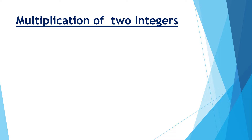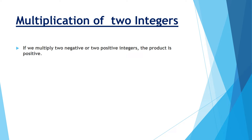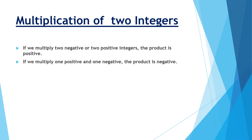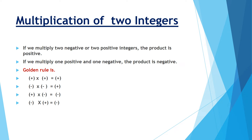If we multiply any two negative or two positive integers, then the product is positive. If we multiply one positive and one negative, then the product is negative. The golden rule for multiplication is: plus into plus is plus, minus into minus is plus, plus into minus is minus, and minus into plus is minus. This we need to remember to do the multiplication.